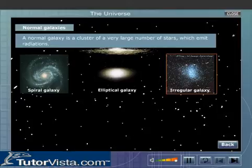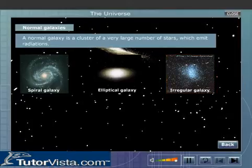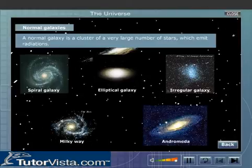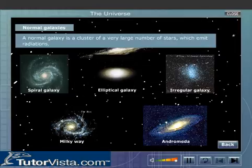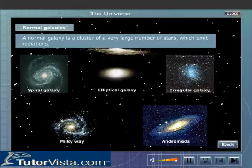The two important galaxies, namely Milky Way and Andromeda, are spiral galaxies. Our solar system is a part of the Milky Way galaxy.